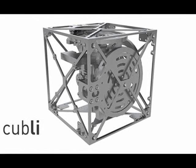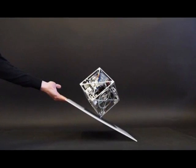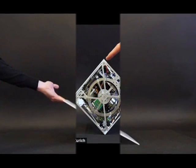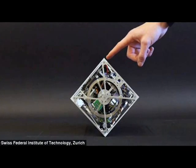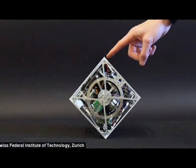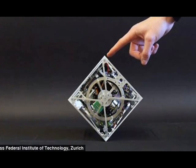First, the device has a small footprint and second, the Cubli can jump up from a resting position without any external support by suddenly braking its reaction wheels rotating at high speeds.